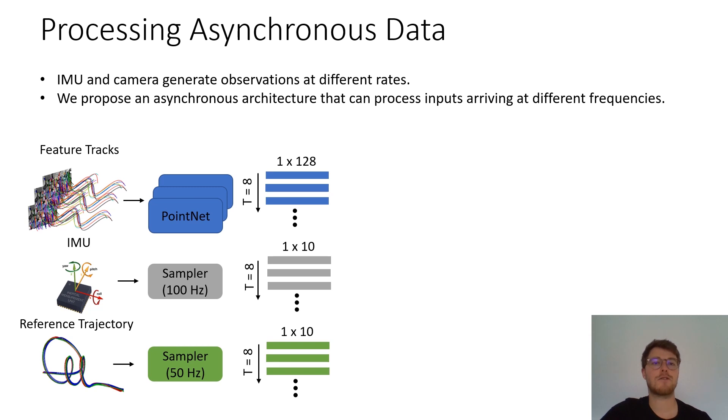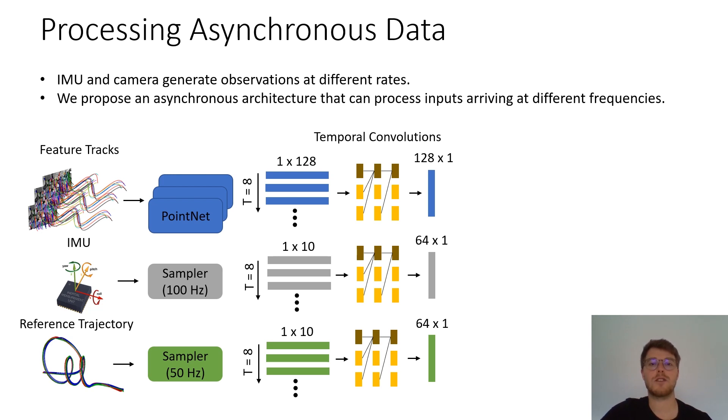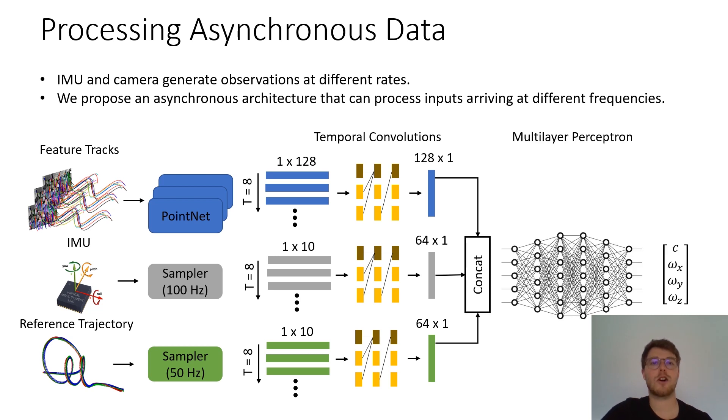We keep a history of each input stream. At a constant frequency, we take the newest batch of each stream and encode using temporal convolutions. Concatenating the encodings and feeding them through a standard MLP produces the control commands in the form of collective thrust and body rates.